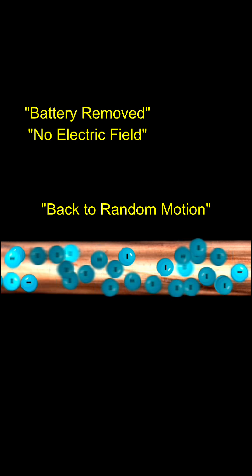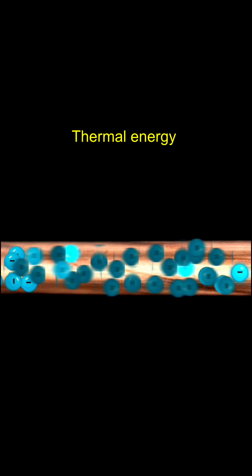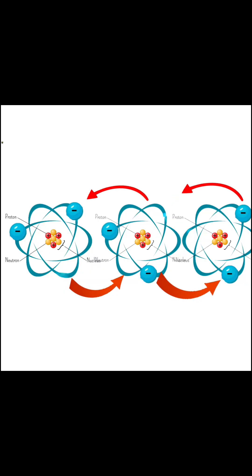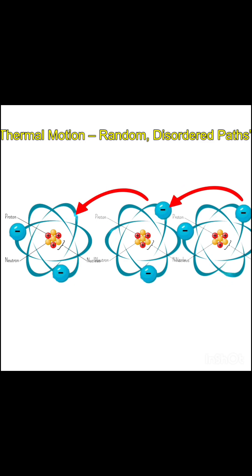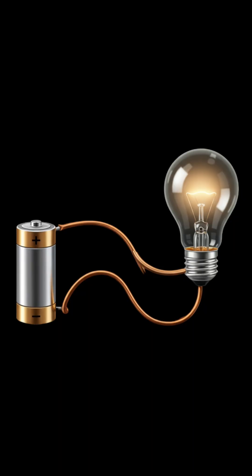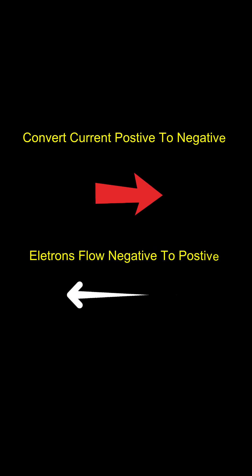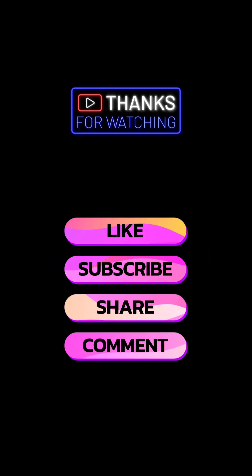So remember: free electrons are always in random motion due to thermal energy, moving from atom to atom in a disordered way. They don't flow in one direction by themselves. It is electrical energy from a battery or generator that gives this motion direction, creating the electrical current that powers our world.